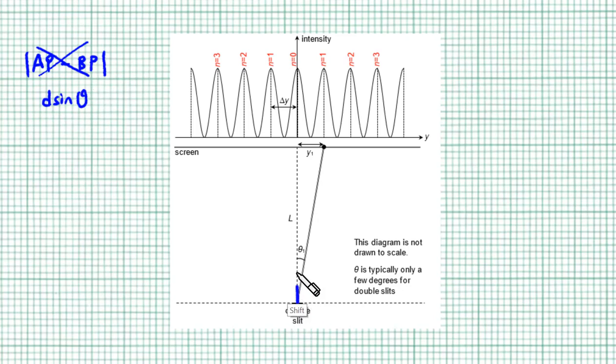From the double slit to the very center, this is where theta is 0 degrees. So when we move away to either side of theta is equal to 0 degrees, we have an increasing theta.